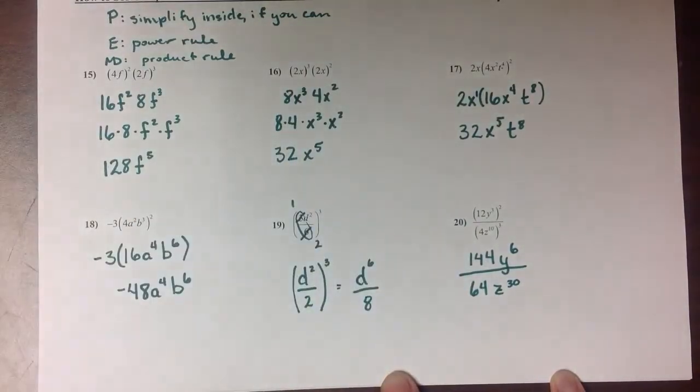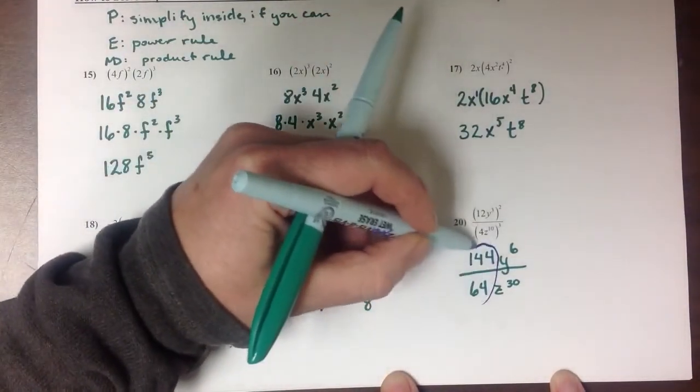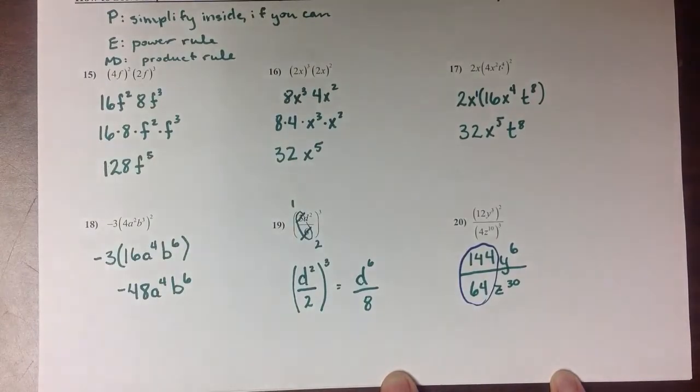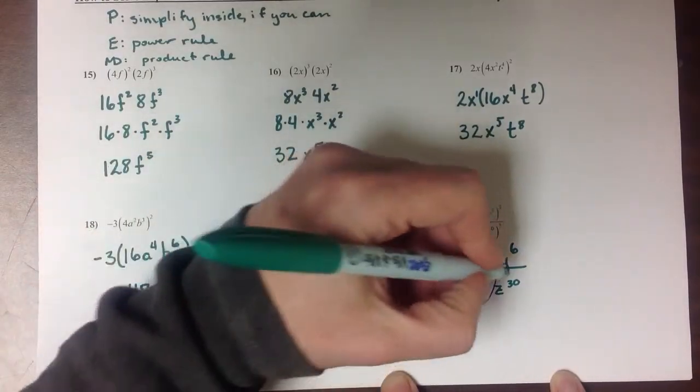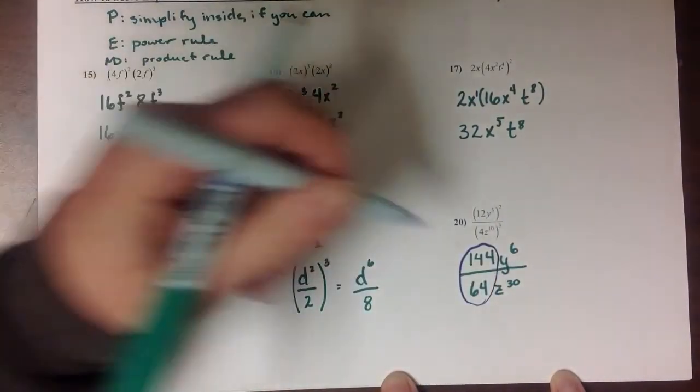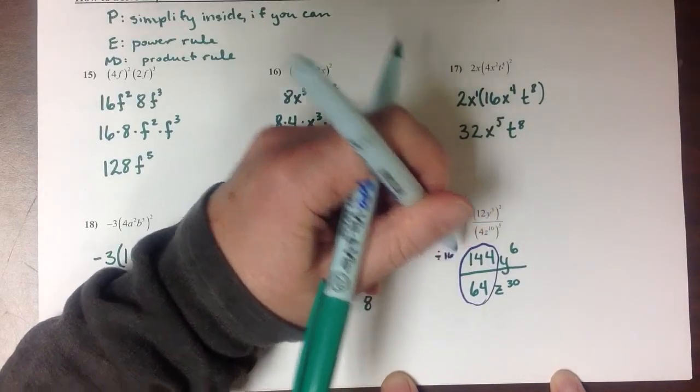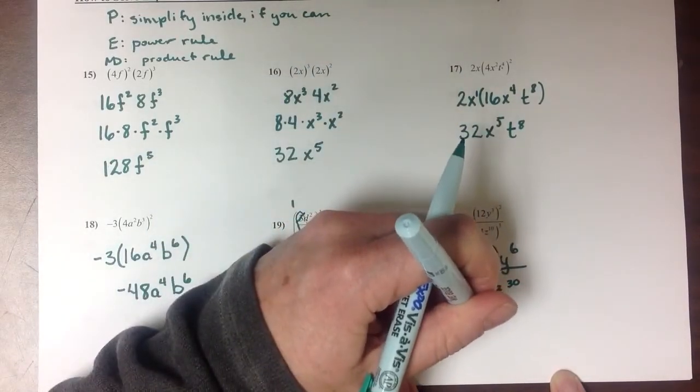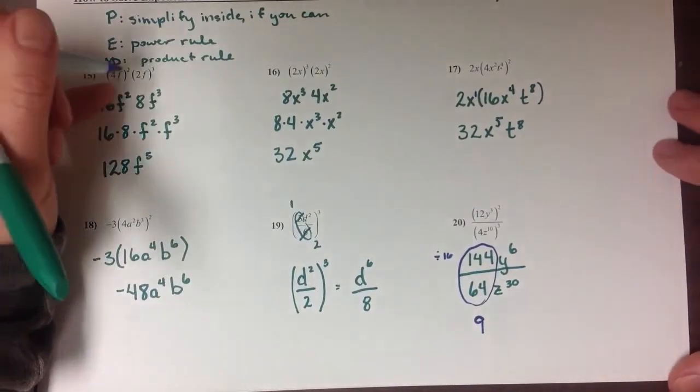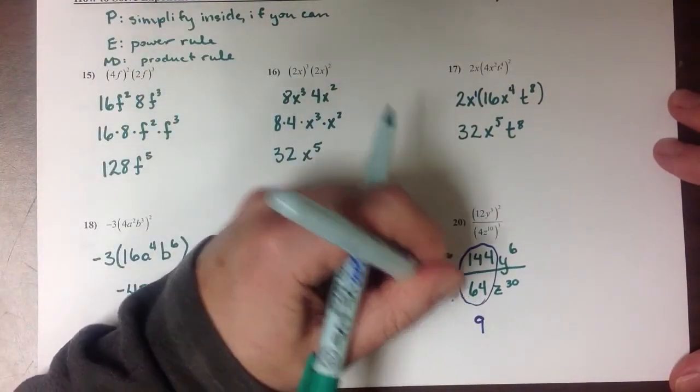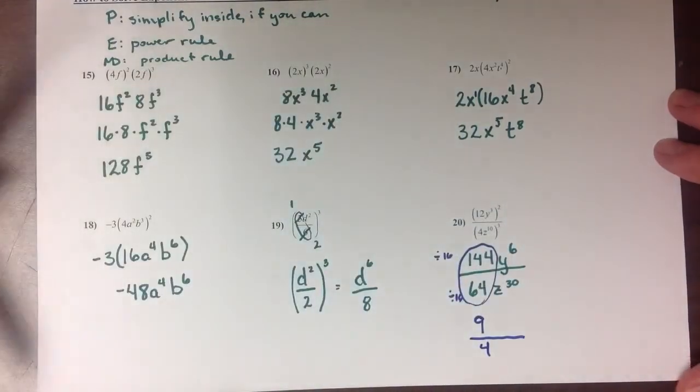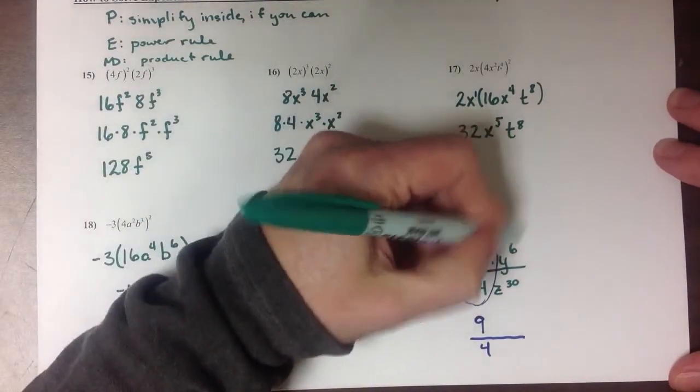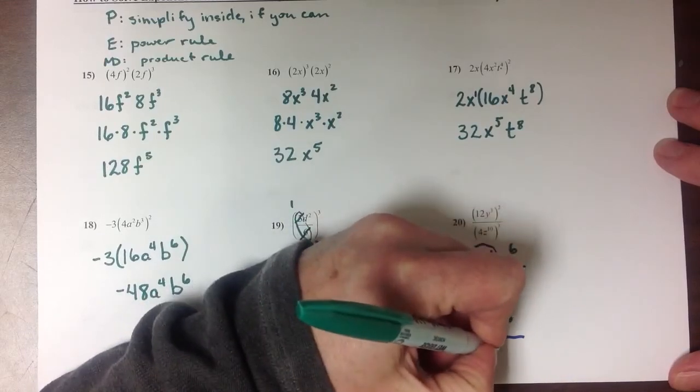Now I'm going to reduce just the fraction portion of this problem. Since I can divide both the top and bottom by 16 here, when I divide the top by 16 I get 9, and when I divide the bottom by 16 I get 4, and then the exponent, the variable parts of my equation will stay the same.